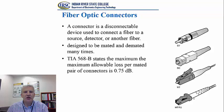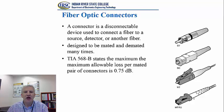A fiber optic connector is a disconnectable device used to connect a fiber to a source, detector, or another fiber. This type of device is designed to be mated and demated many times — the connection does not have to be permanent and can always be removed. There are standards such as TIA-568-B that state the maximum allowable loss per pair of connectors, which is 0.75 dB maximum. Every time we establish a connection using connectors, we want to ensure the loss is below that maximum allowable value.